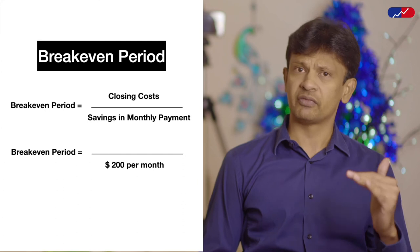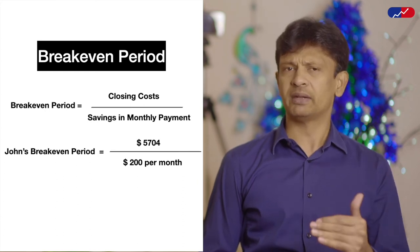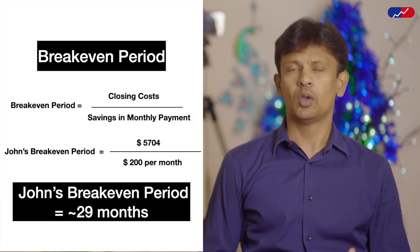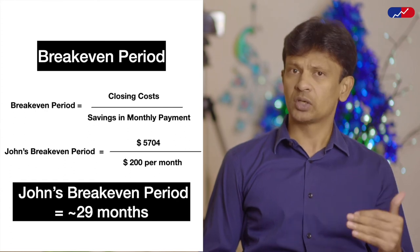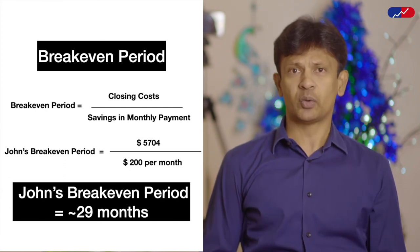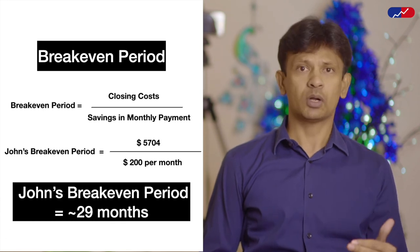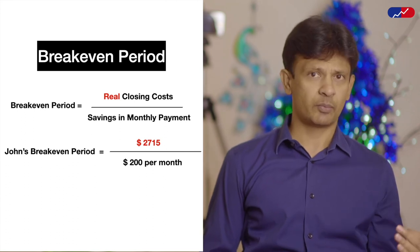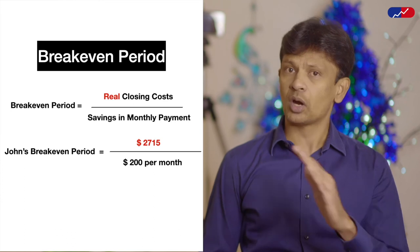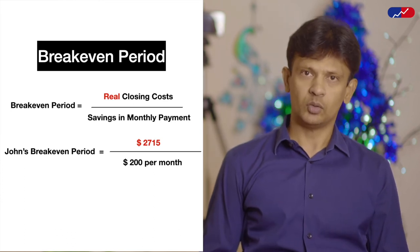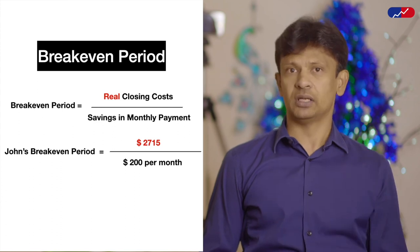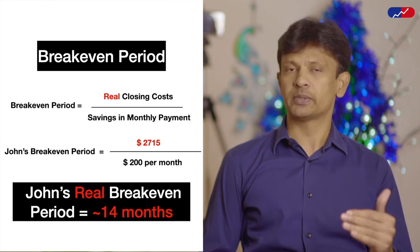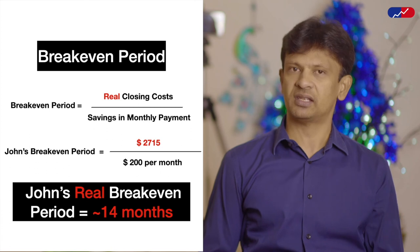If you consider the entire $5,700 as his closing costs, then his breakeven period will be $5,700 divided by $200 in monthly savings, which is almost 29 months. This means John should keep his loan and his house at least 29 months to justify his refinancing. However, we now know that his real costs are only $2,715, as the rest of the payment is either for prepaids or escrow and should not be considered a refinance cost. So his real breakeven period is $2,715 divided by $200 in monthly savings, which is less than 14 months — meaning John only needs to keep his loan and house for 14 months to justify refinancing.